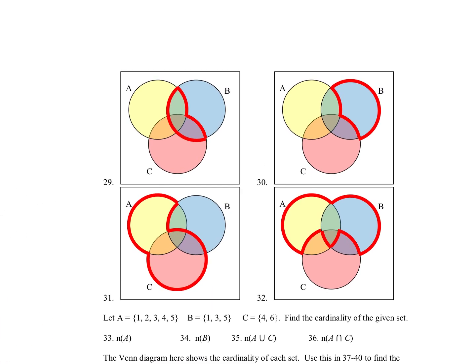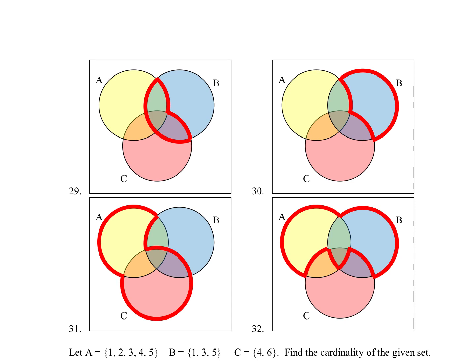Now we're going to write a symbol for these shaded regions. For these pictures, I think about union or intersection. I see the middle section that looks like an intersection — that's actually A intersected with B. But then we also have another portion to consider, which is the intersection of B and C. So to put together both of those intersections, we write a little union symbol. That's just one way to write it — there are other ways to get the same shaded region.